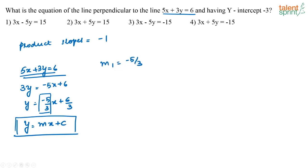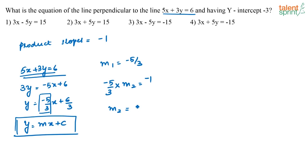So what should be the slope of the second line which is perpendicular to it? The product of the slopes of both lines should be equal to minus 1. So m2 should be equal to 3 by 5.